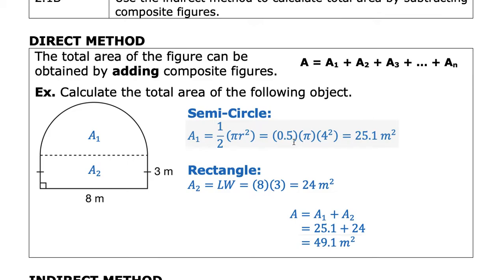So we have 0.5 times pi times 4 squared, and the answer has been rounded to a tenth, one decimal place, and we always include the units in our final answer. In this case we're talking about meters squared, because that is a two-dimensional area.